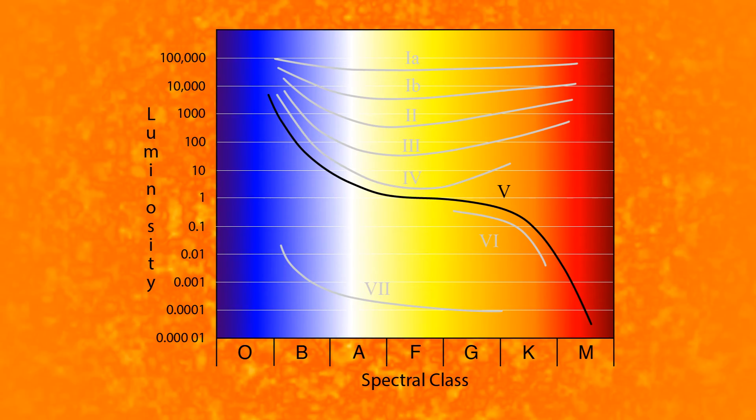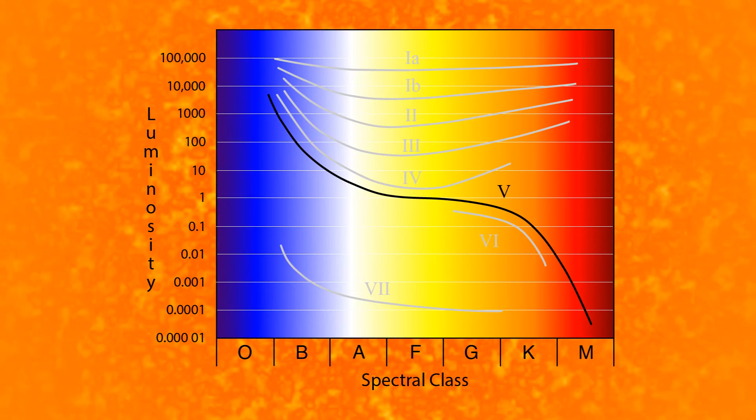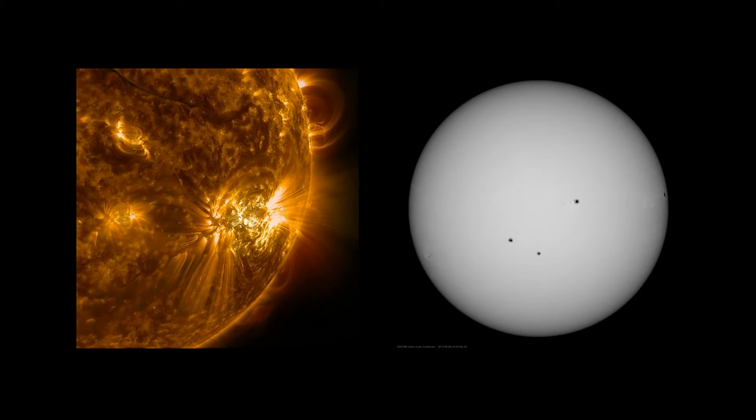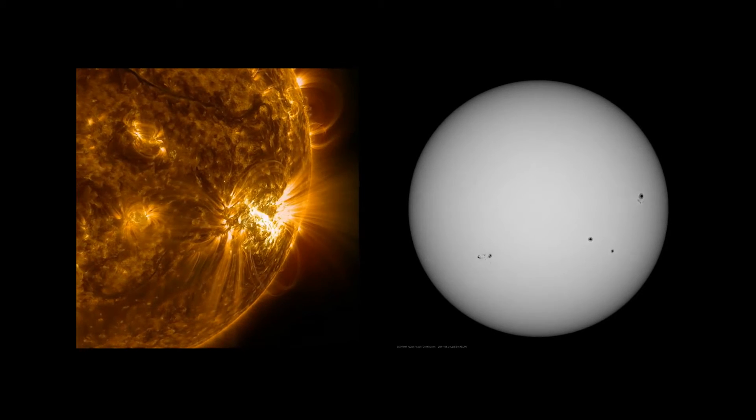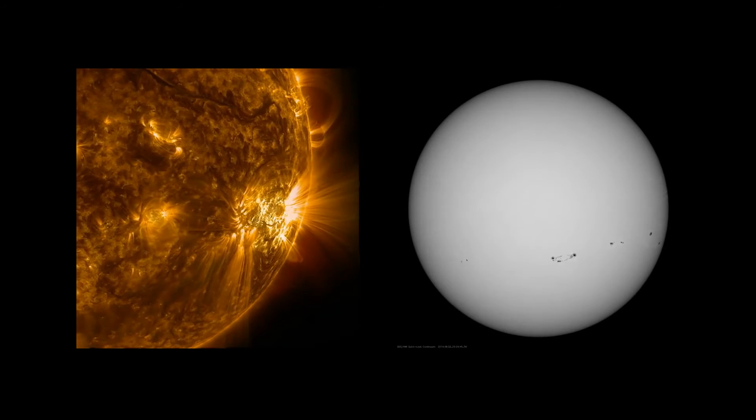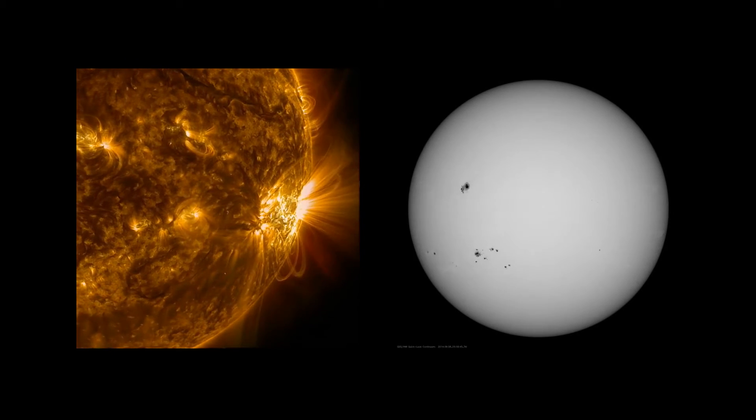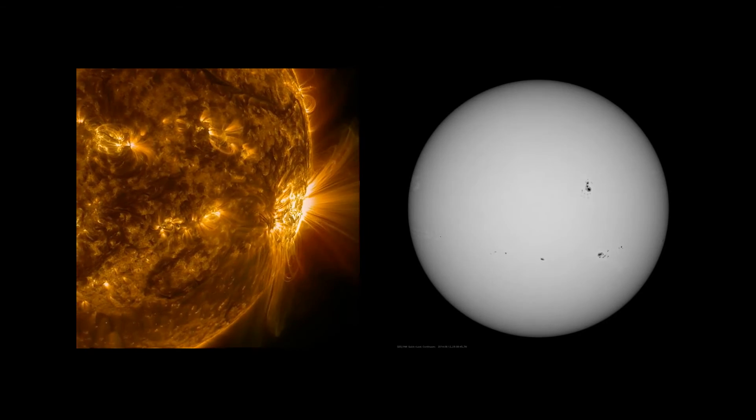The main sequence stars are identified by the numeral V. Stars spend most of their lives here, quietly burning hydrogen into helium. Our sun is in this stage. Stars that are on the main sequence are called dwarfs.